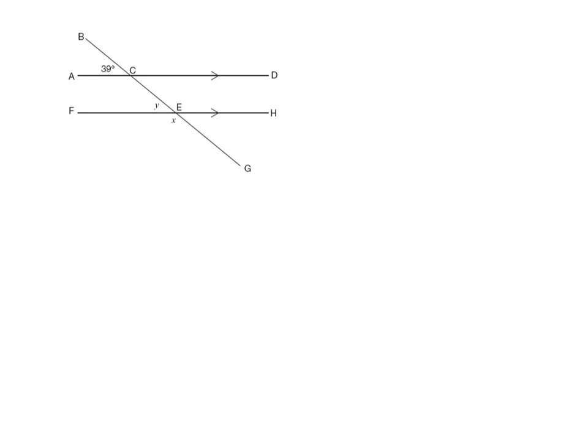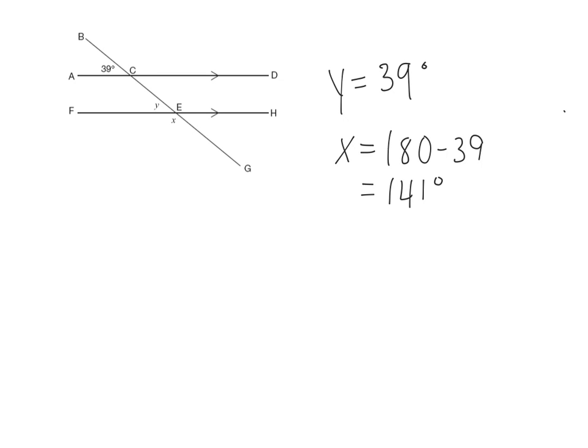Next question. For this question, I see that I have two parallel lines and a transversal. I have one angle which is 39 degrees. I can see that 39 degrees is corresponding with y, so I would simply write y equals 39 degrees. Now I've got to figure out x. I can see that y and x are supplementary angles, so to find x I would simply do x equals 180 minus 39, and I would get 141. So x equals 141 degrees.